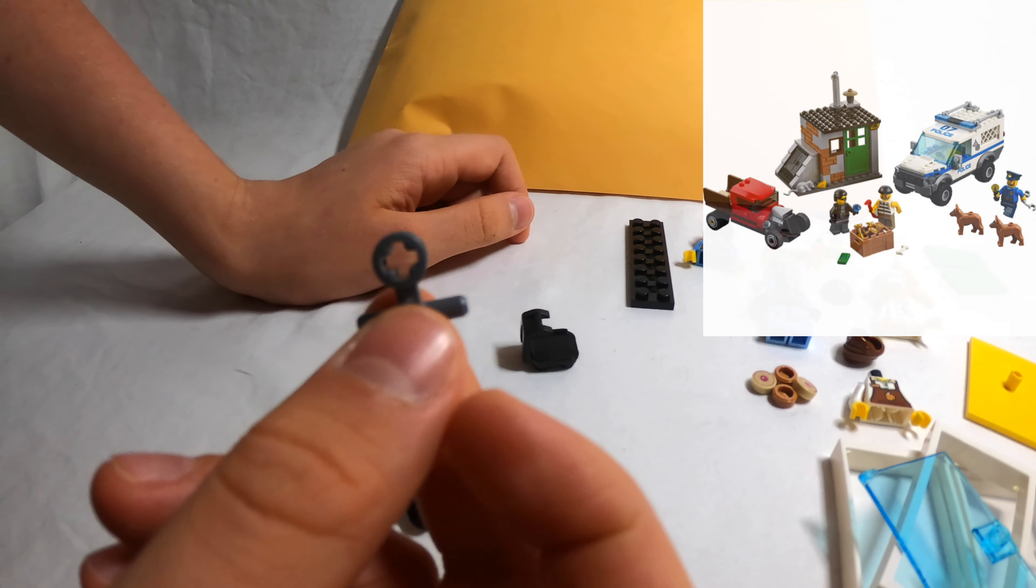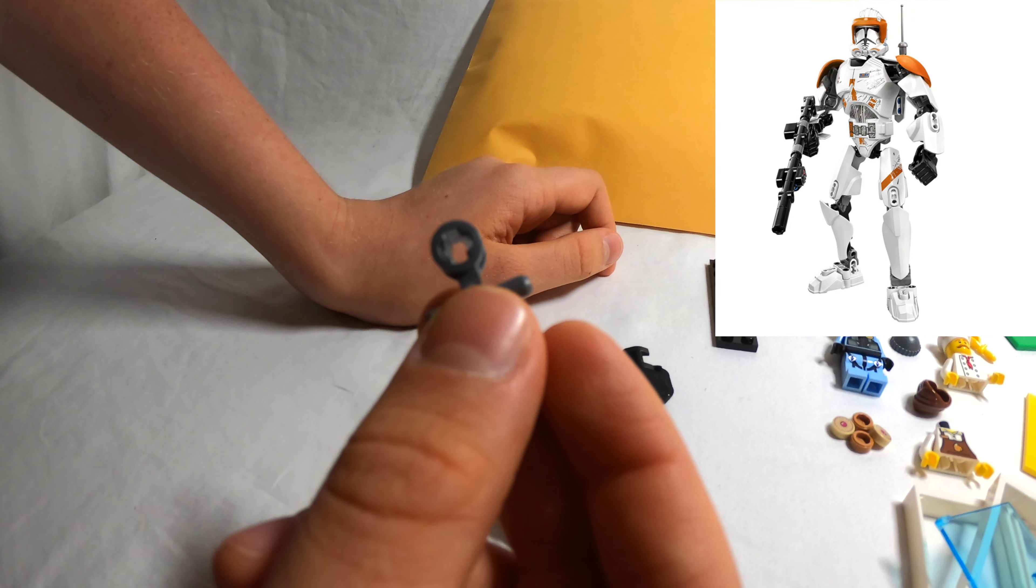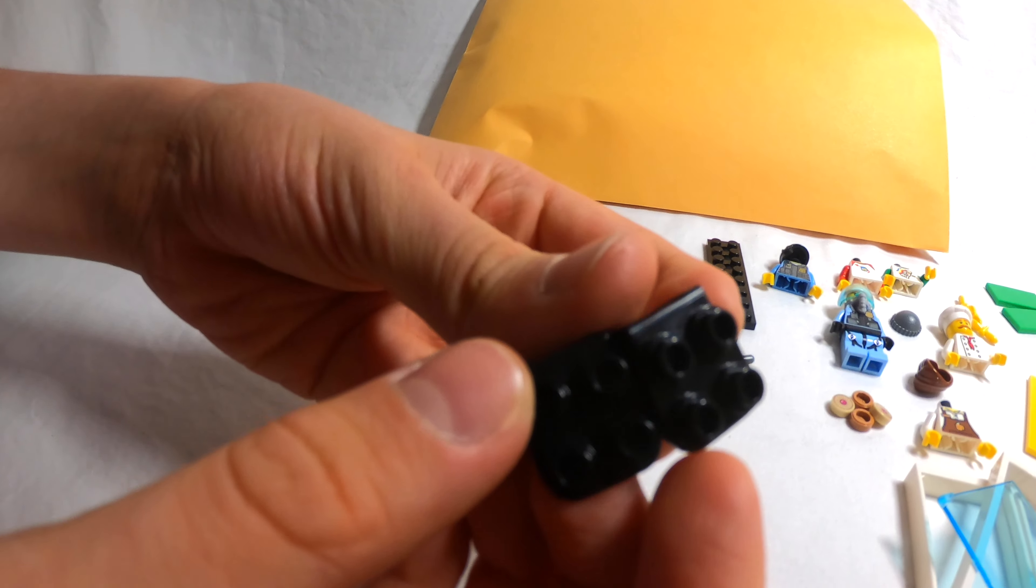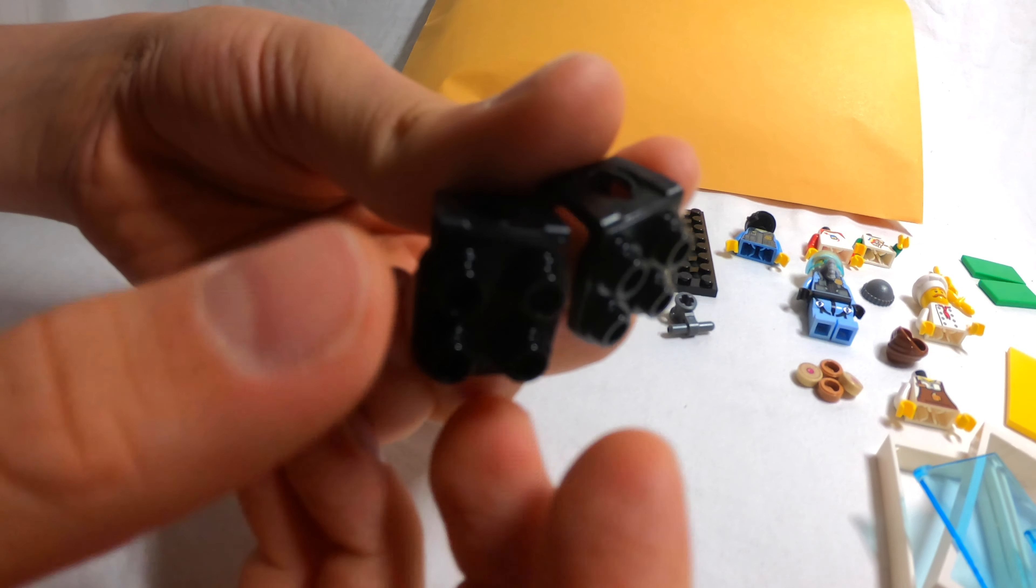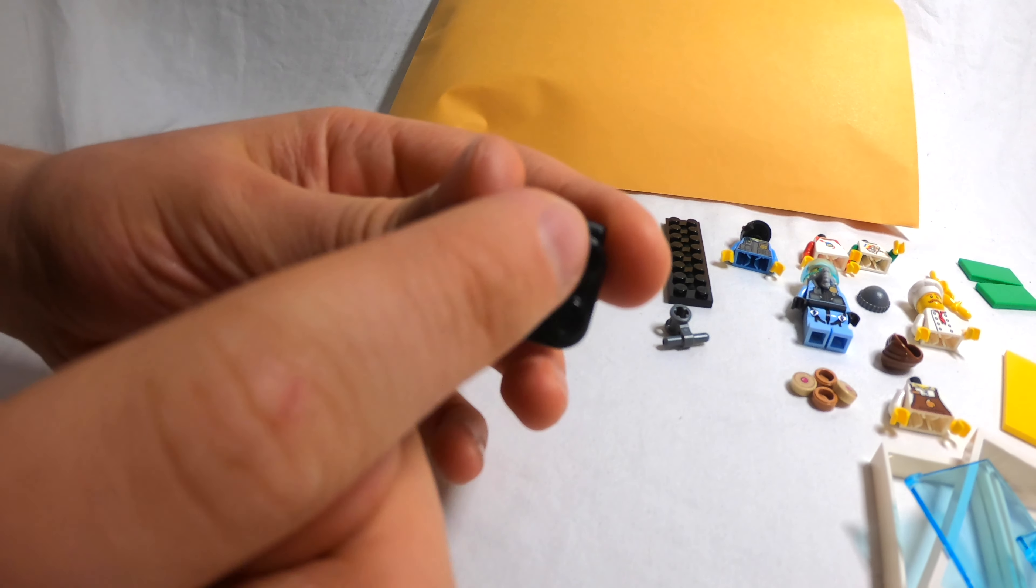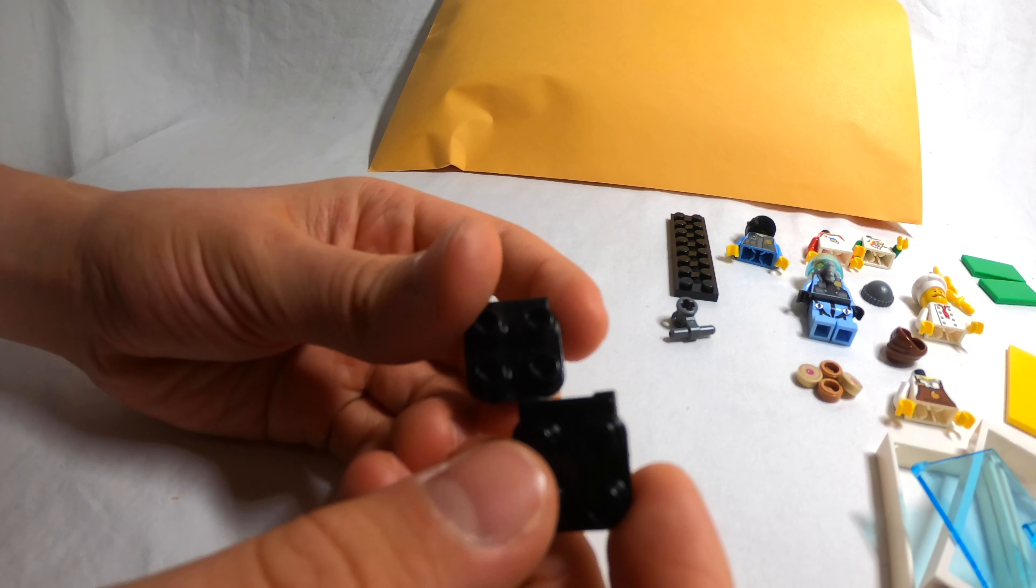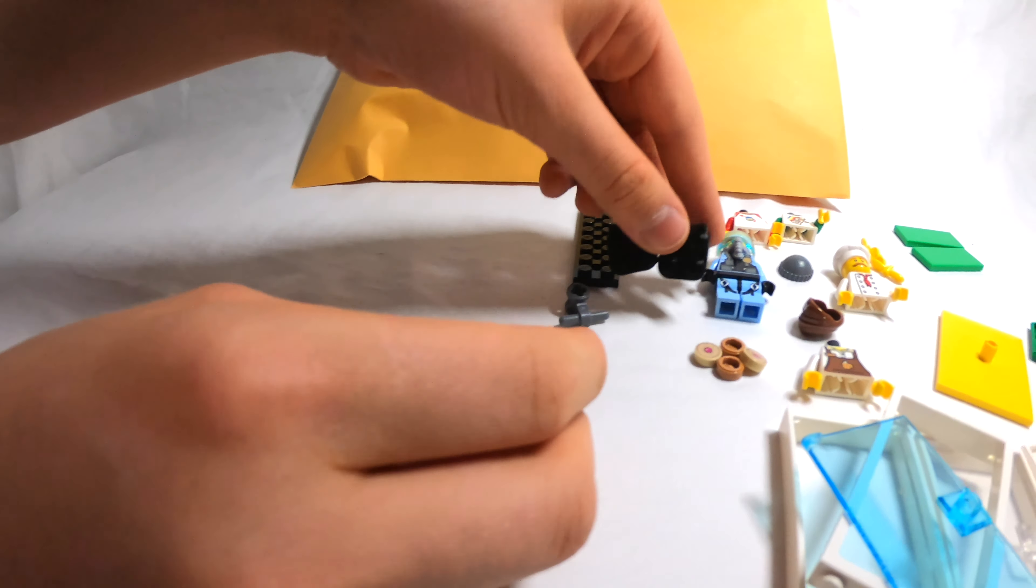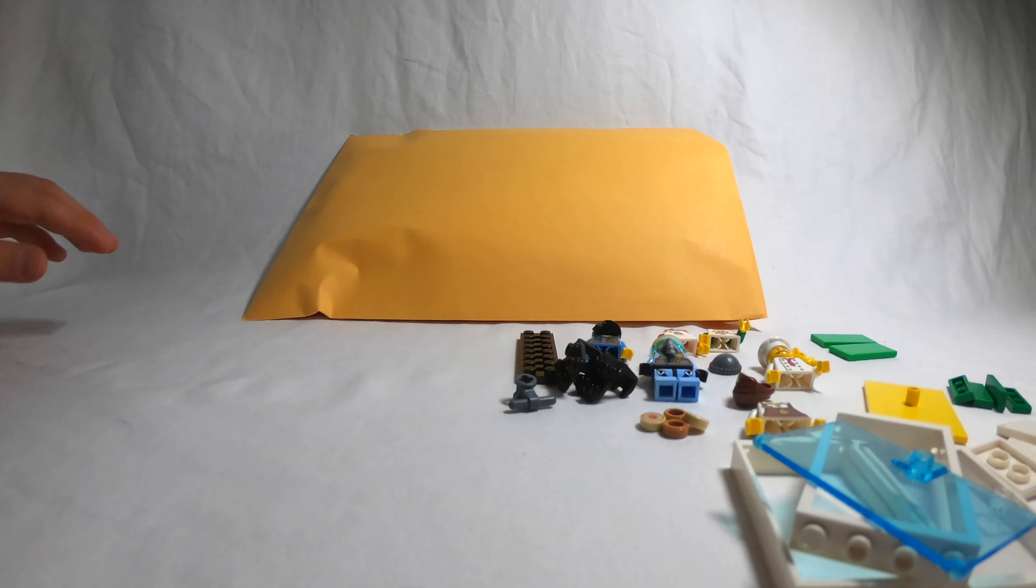And this is for the buildable figure Commander Cody. The two of these are for the police. They're going to be either like backpacks or we might like try and build them into like a bulletproof vest somehow. We're not sure yet. Now let's continue to the next package.